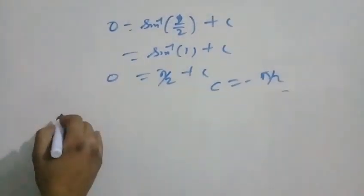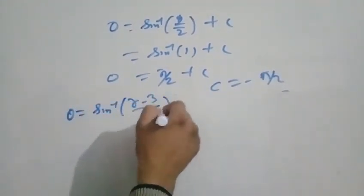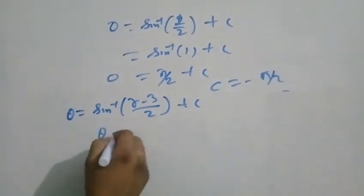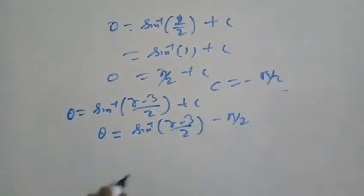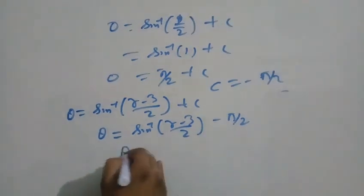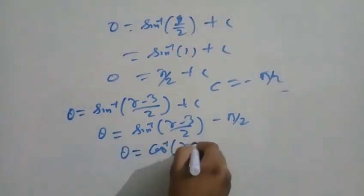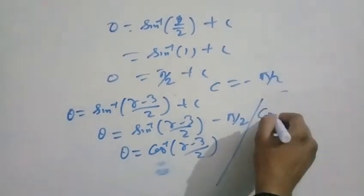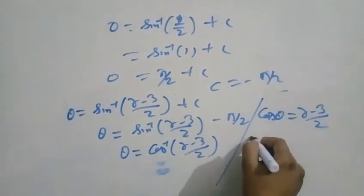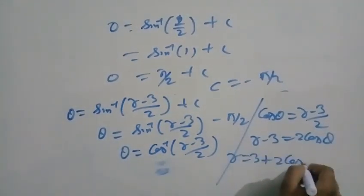Substituting B into equation 3: θ equal to sin⁻¹((r minus 3)/2) minus π/2, which equals cos⁻¹((r minus 3)/2). Therefore (r minus 3)/2 equal to cos θ, giving r equal to 3 plus 2 cos θ, which is the required equation of the orbit.